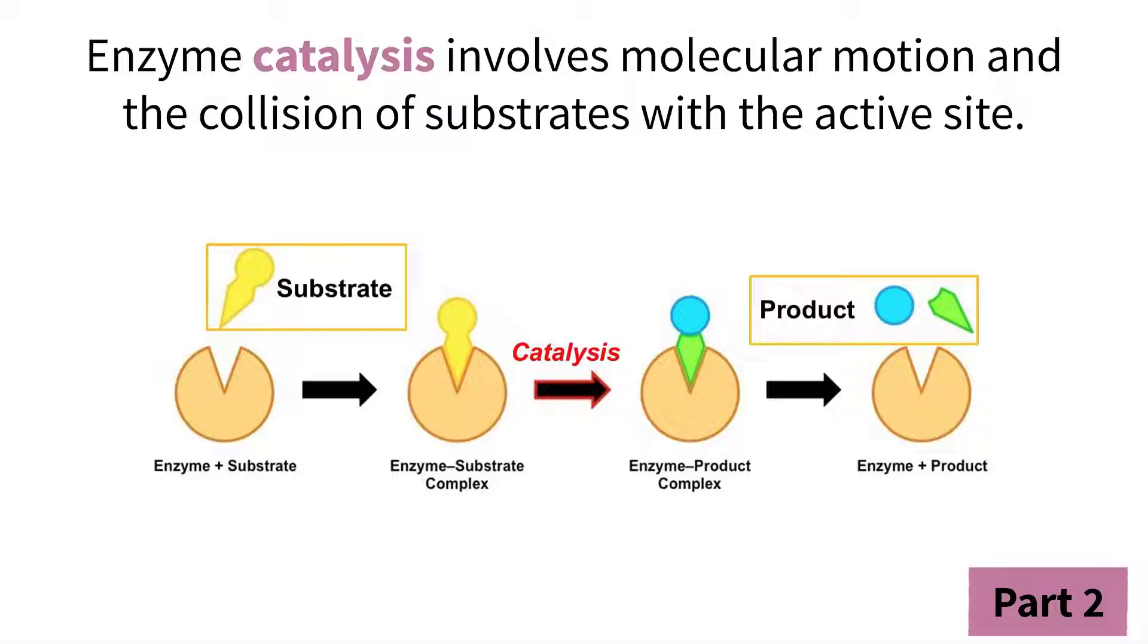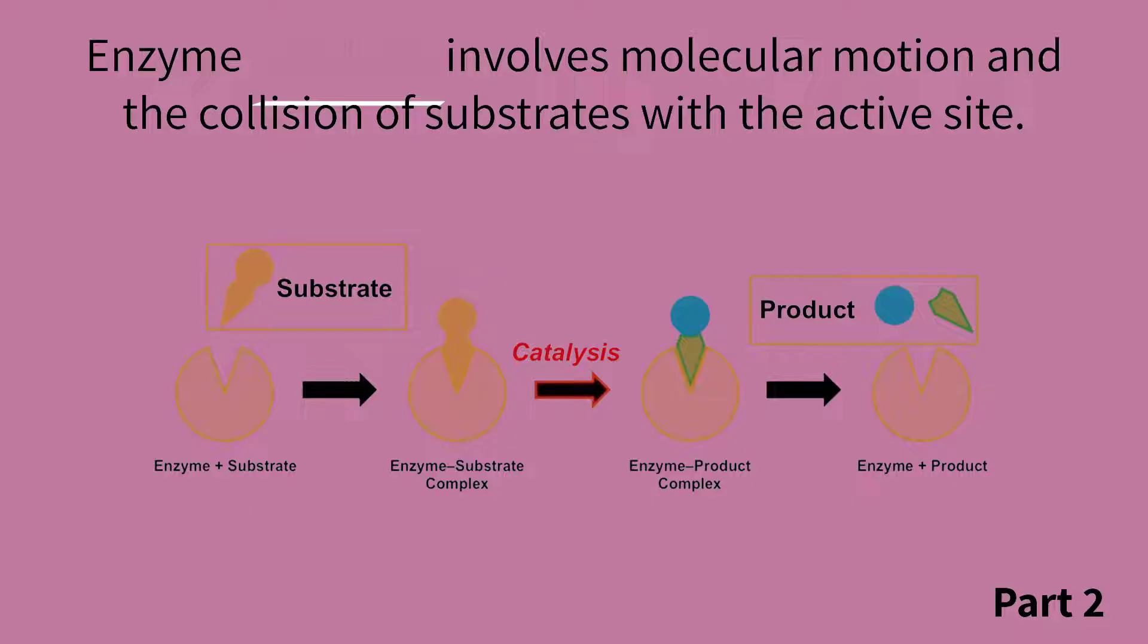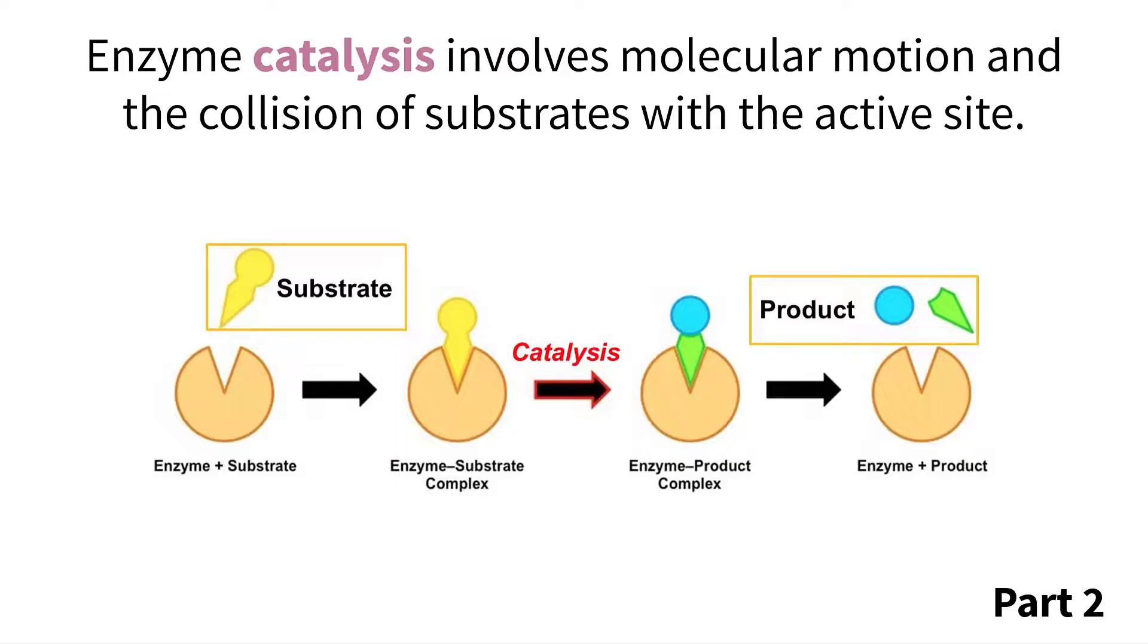I mentioned before that enzymes have the ability to speed up chemical reactions, and when this happens we can refer to it as enzyme catalysis. This entire concept is explained by putting together what we already know, which is that enzymes can speed up the rate of a reaction and do so by having a substrate fit perfectly into its active site. But why does this work? What does the substrate fitting into the active site actually do?